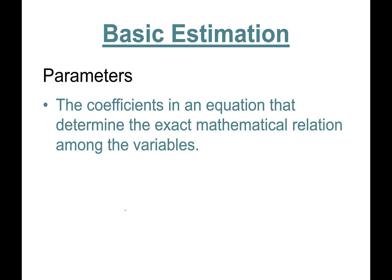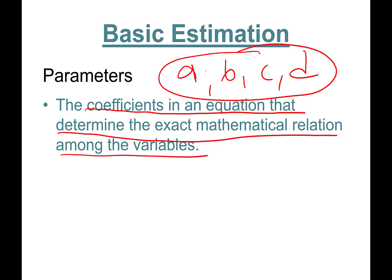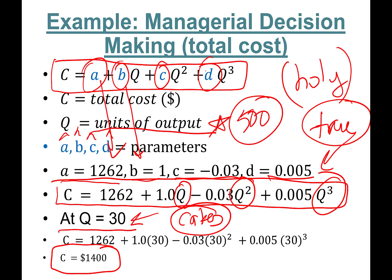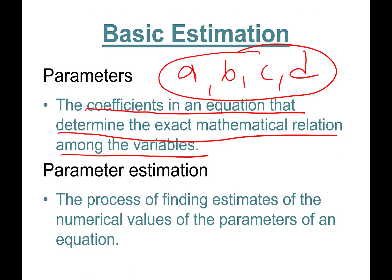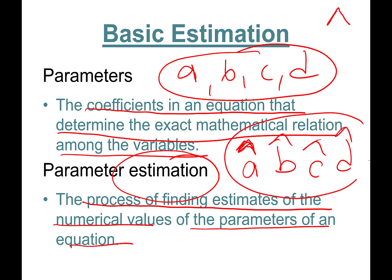Basic estimation: parameters — in our case A, B, C, and D — are the coefficients in an equation that determine the exact mathematical relation among the variables. Knowing A, B, C, and D, we were able to determine that baking 30 cakes costs $1,400. Parameter estimation is the process of finding numerical values for the parameters of an equation. The estimates are denoted Â, B̂, Ĉ, and D̂ — we find these using statistical techniques such as ordinary least squares regression.